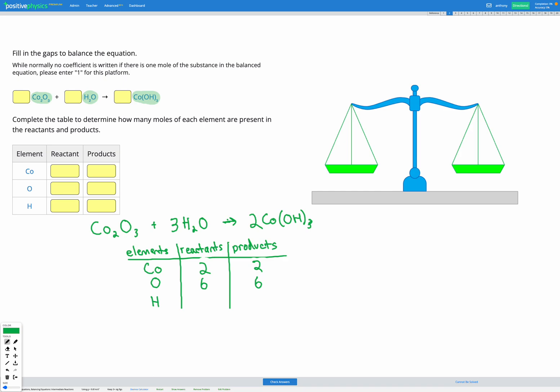For the H, I've got subscript two and a coefficient of three. So three times two is six. And then afterwards, I've got OH with that subscript three. So that's three H's. And I have a coefficient two. So two times three is six. So now they are all equal. We have successfully balanced our equation.